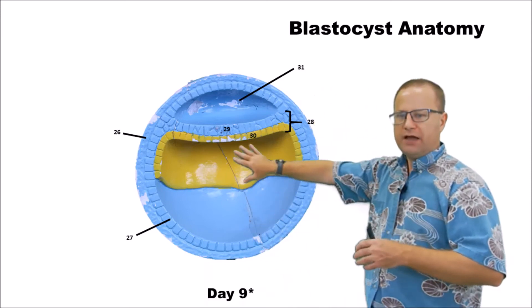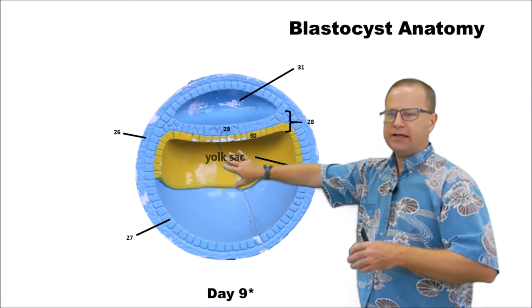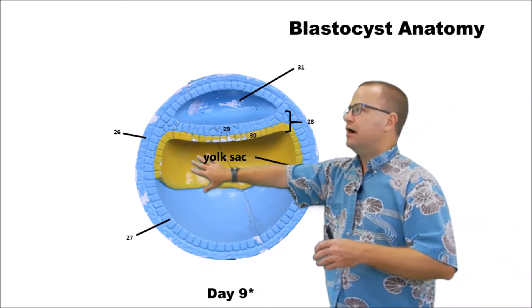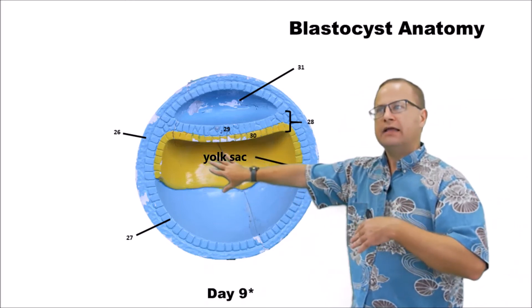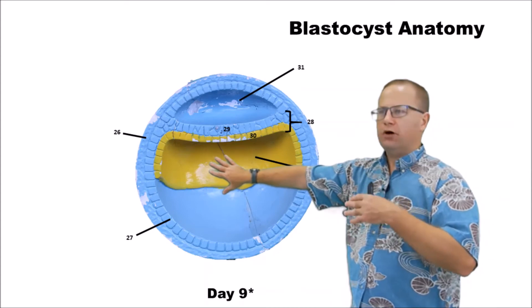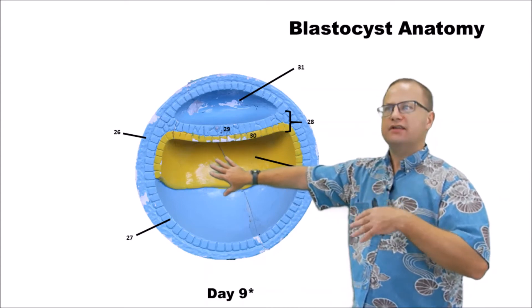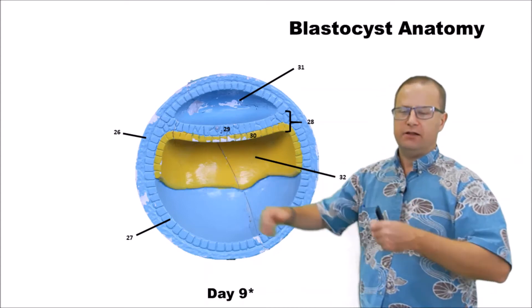Below that we can see the developing yolk sac. This will go on to become the inside of the gut, and it's an area where we will actually form immature blood cells during the process of development.